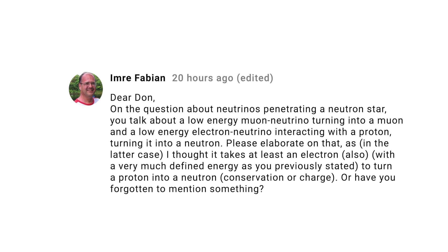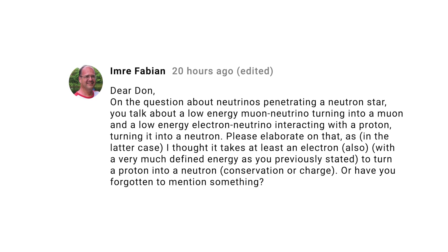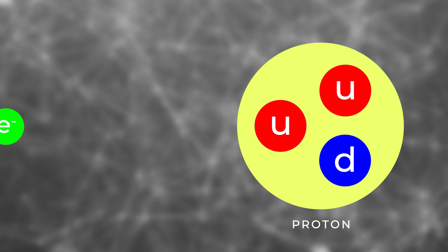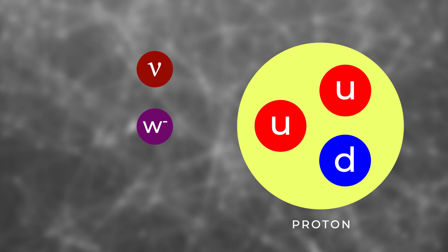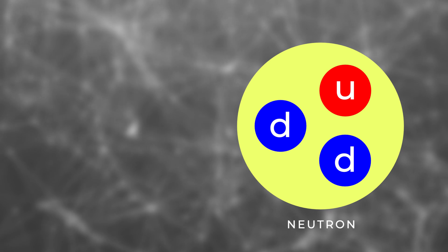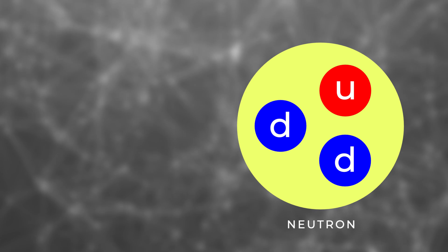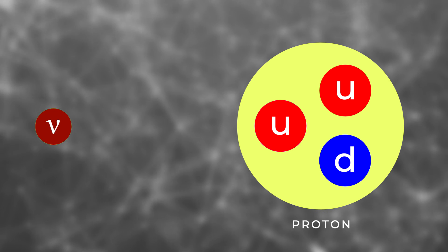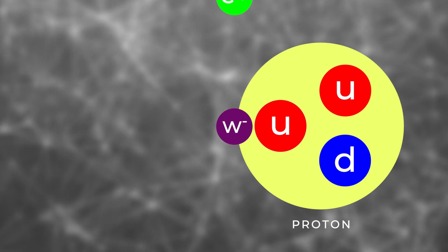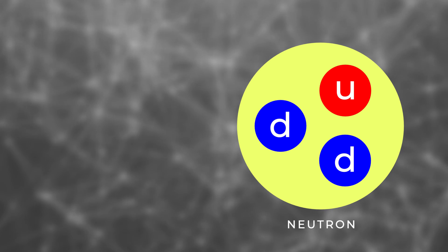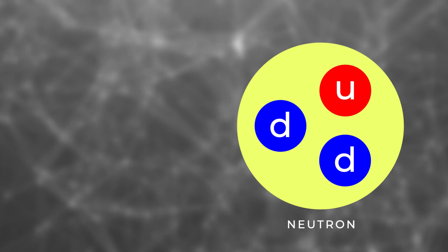Emory Fabian asks how a neutrino can convert a proton into a neutron when he thought it required an electron. Actually, both can work. An electron converts a proton into a neutron by emitting a negative W boson and turning into a neutrino; the W boson then hits an up quark in the proton, converting it into a down quark, and therefore the proton into a neutron. The situation is similar with an antimatter neutrino: it also emits a negative W boson and converts into a positron, and the W boson does the same thing to the proton. So antineutrinos can convert protons into neutrons, although neutrinos can't — but that's a deeper level of truth than I usually cover.